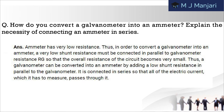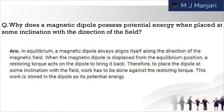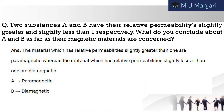Next: how do you convert a galvanometer into an ammeter? Explain the necessity of connecting an ammeter in series. Next: why does a magnetic dipole possess potential energy when placed at some inclination with the direction of the field? Next: two substances A and B have their relative permeability slightly greater and slightly less than 1 respectively. What do you conclude about A and B as far as their magnetic materials are concerned?